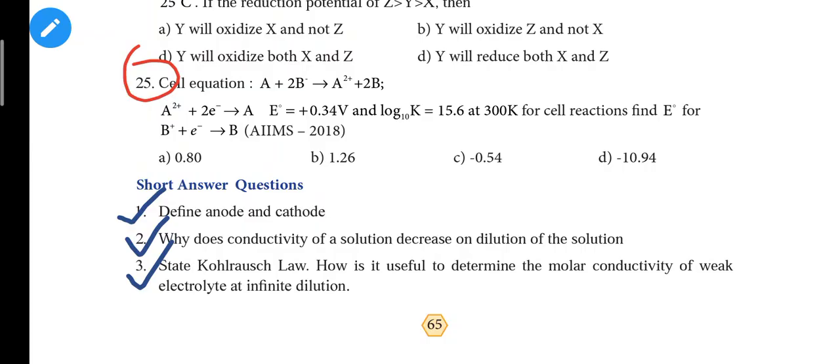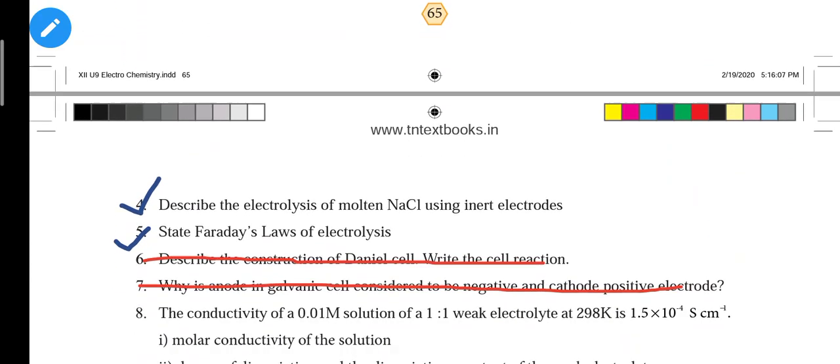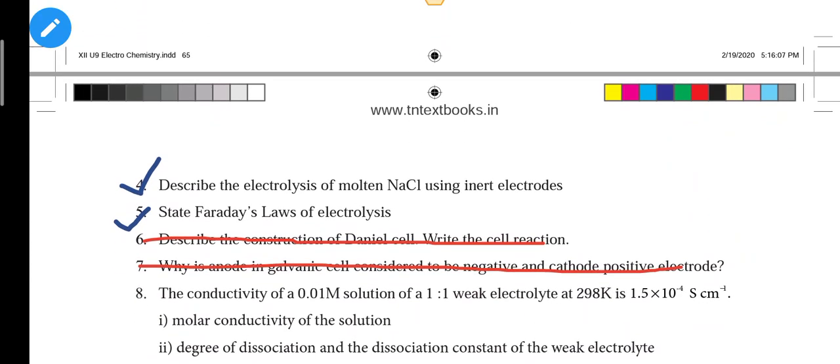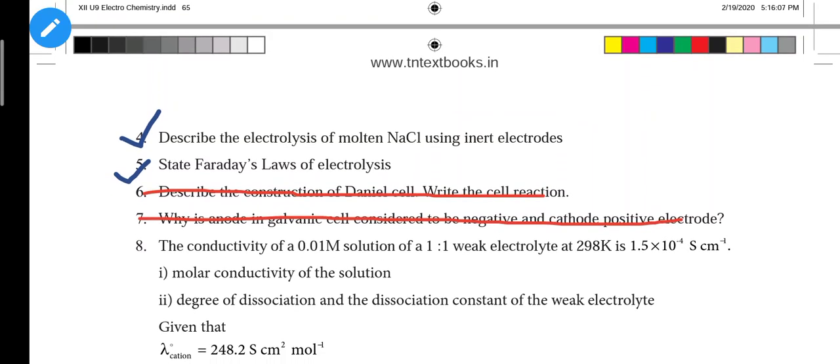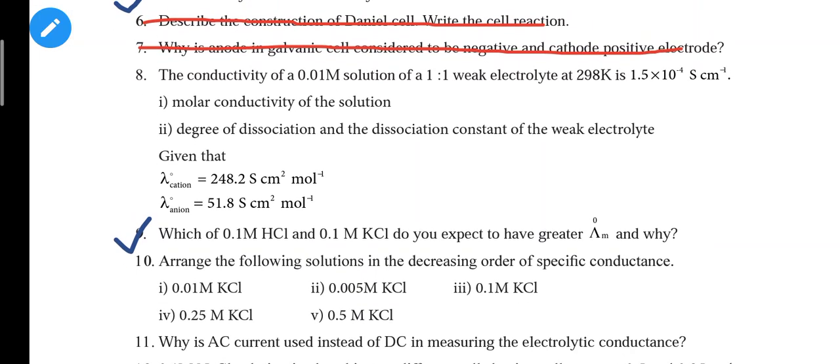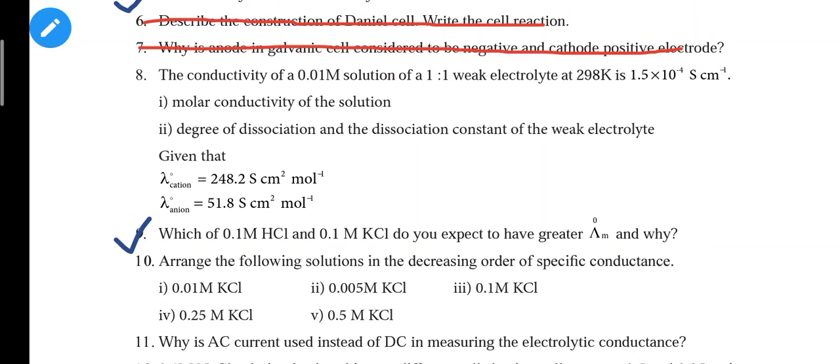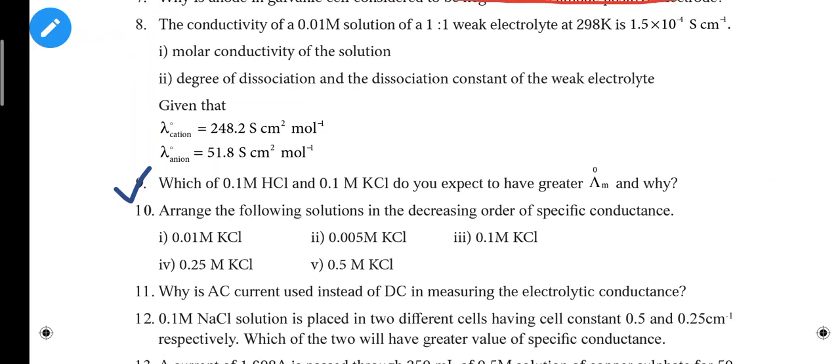Third question is Kohlrausch's Law, also an important question. Fourth question: Electrolysis of molten NaCl using inert electrodes - this is a very important question worth two or three marks. Ninth question asks which of these two has greater delta M value and why.